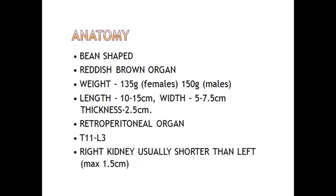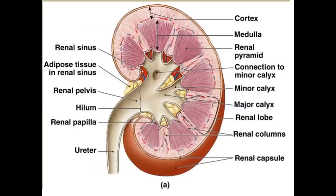Its length is 10 to 15 centimeters, its width is 5 to 5.5 centimeters, and its thickness is 2.5 centimeters. This is a retroperitoneal organ. The right kidney is usually slightly shorter than the left kidney by about 1.5 cm.